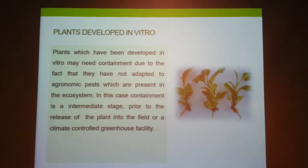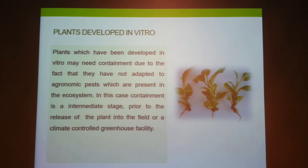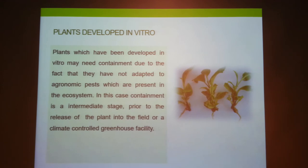Plants developed in vitro may also be subject to containment. Plants weakened through in vitro cultivation are more easily infected with pathogens when planted in the field compared to traditional varieties. For example, in the case of banana produced through tissue culture, large numbers of plants may get infected with virus due to monoculture. You need to ensure plants are resistant before transferring them to the field, otherwise you create a problem not only for your own crop but for neighboring farming communities as well.